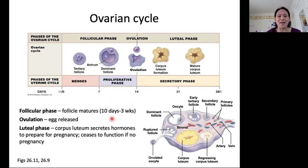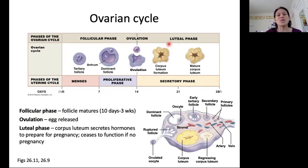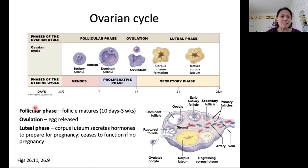In reality, the follicular phase can last anywhere from 10 days to three weeks. Then at the end of the follicular phase we have ovulation, where the egg is released. After ovulation we enter the luteal phase. What happens during the luteal phase is that leftover tissue from the follicle converts to a structure called the corpus luteum, which secretes hormones to prepare the body for pregnancy. If there is no pregnancy, the corpus luteum will cease to function and die off.